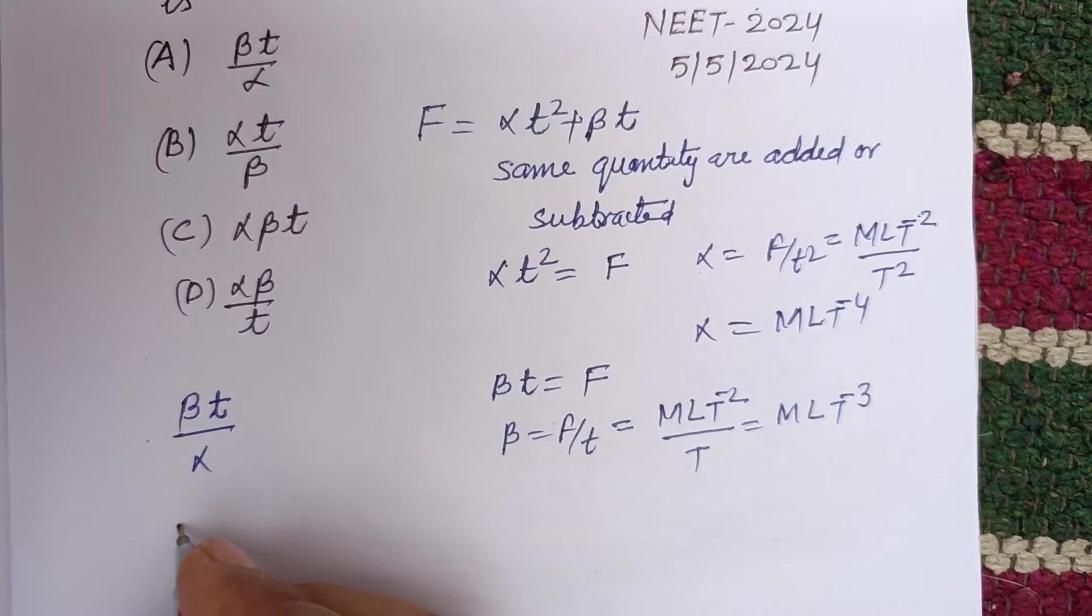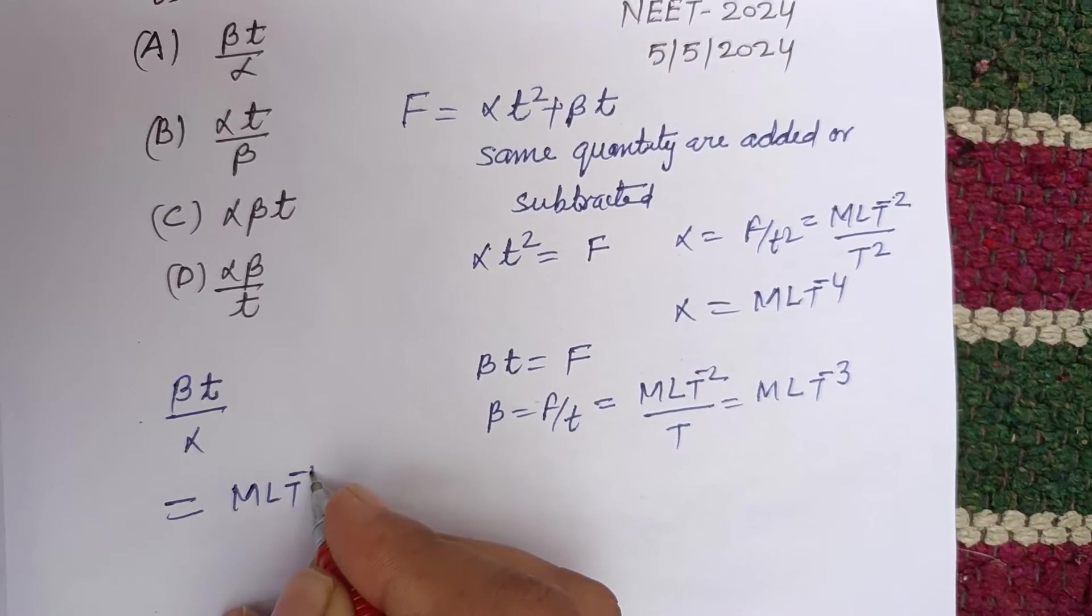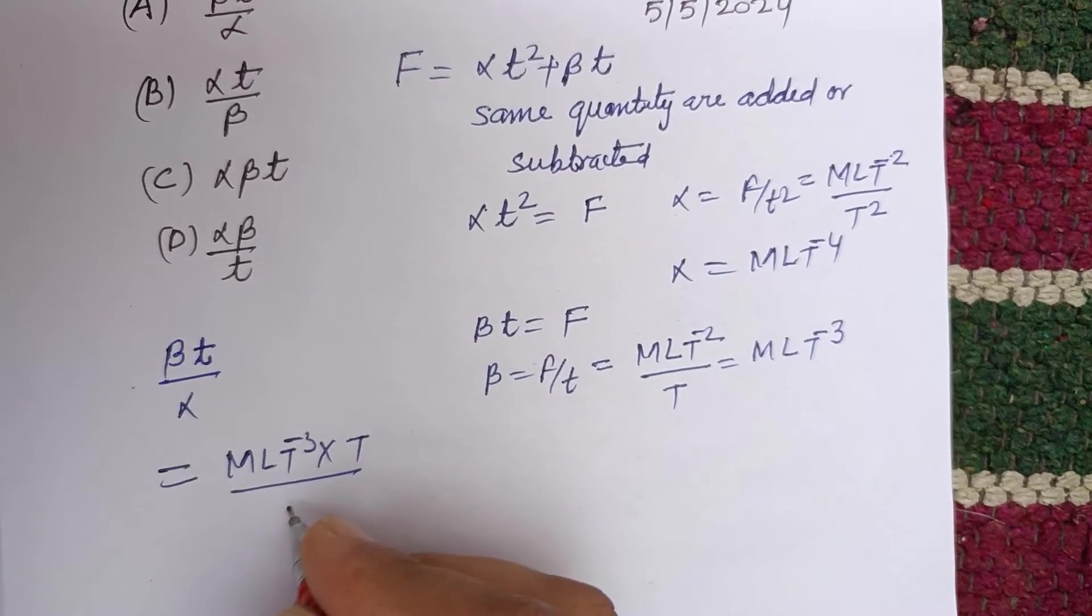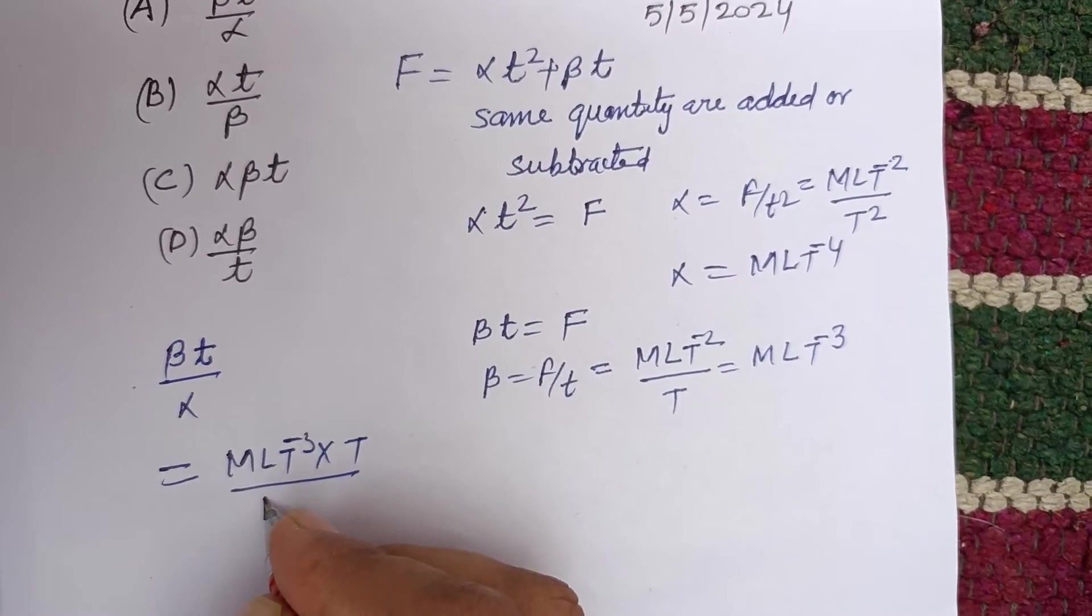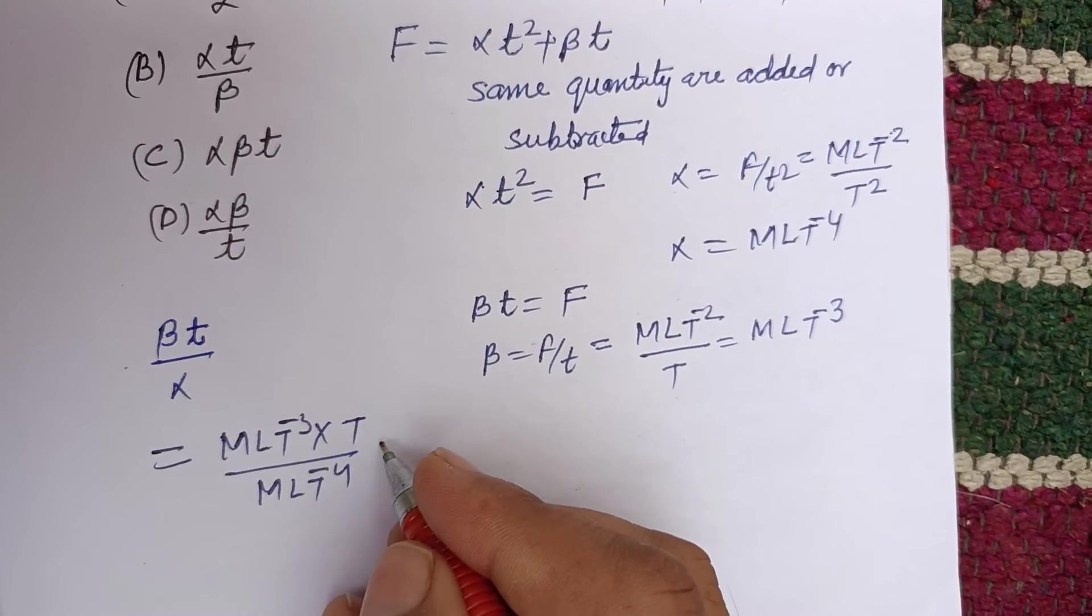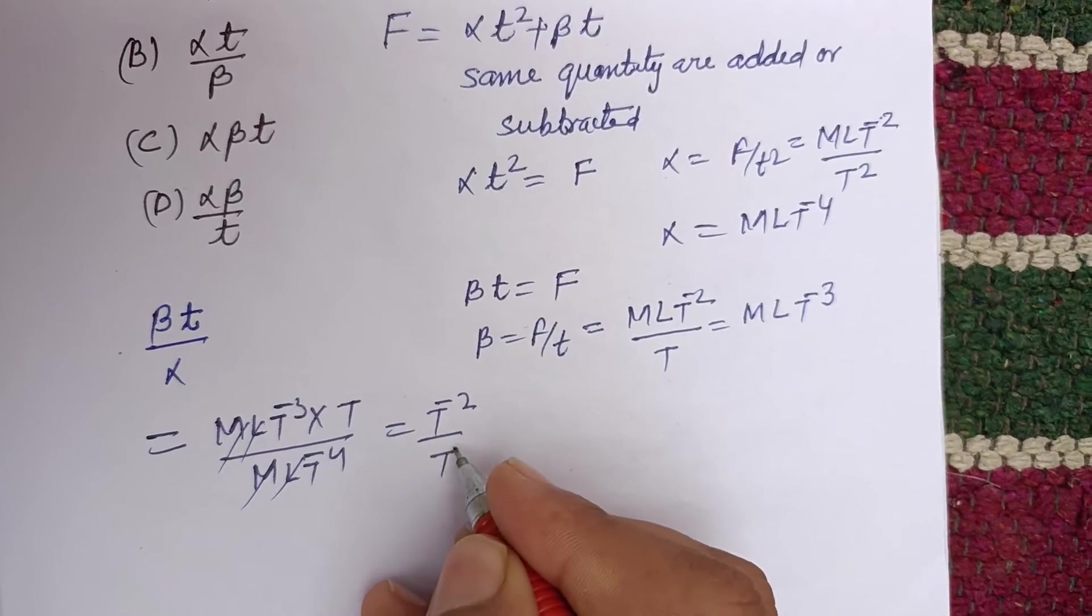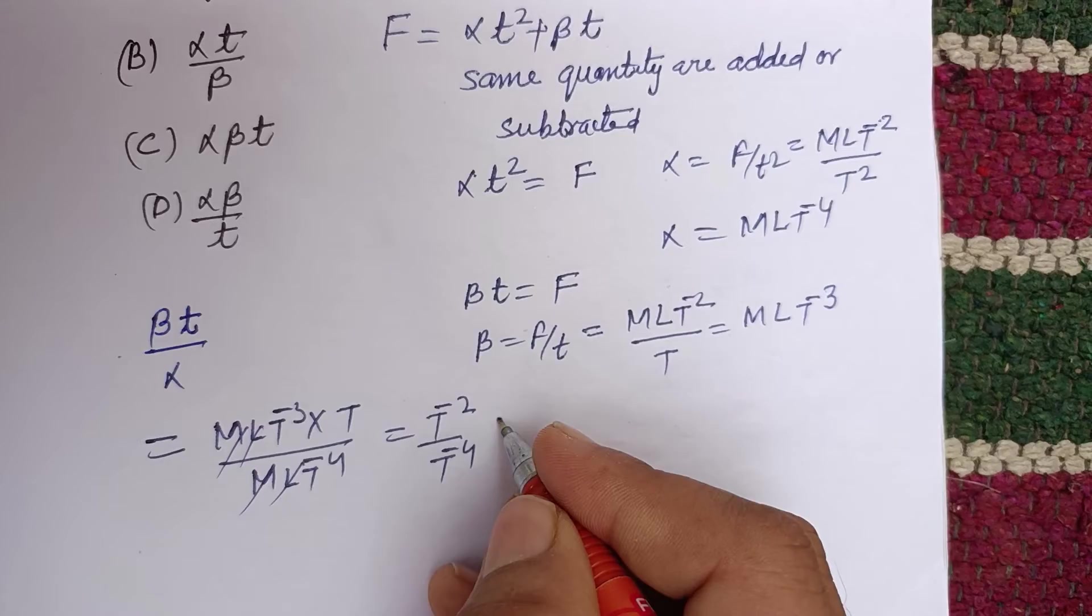MLT minus 3 into t upon alpha is MLT minus 4. So m m cancel, l cancel. This is t to the power minus 2 upon t to the power minus 4, which is not a constant, which is not dimensionless. So this is not correct.